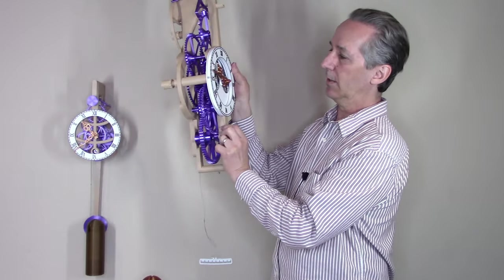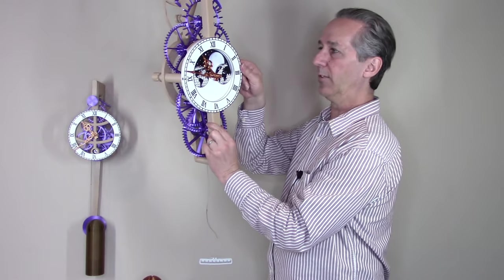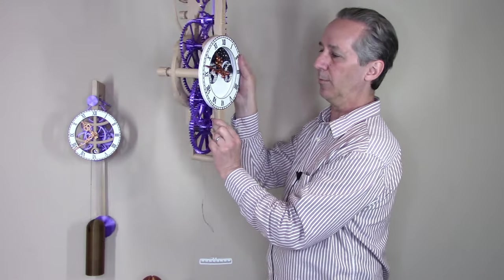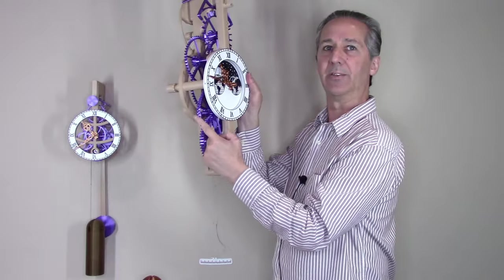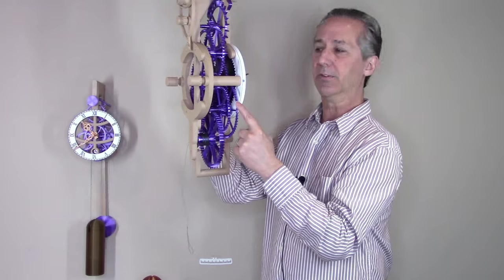The friction clutch allows the moon phase dial to rotate past this gear. And in order to make that happen, this gear...